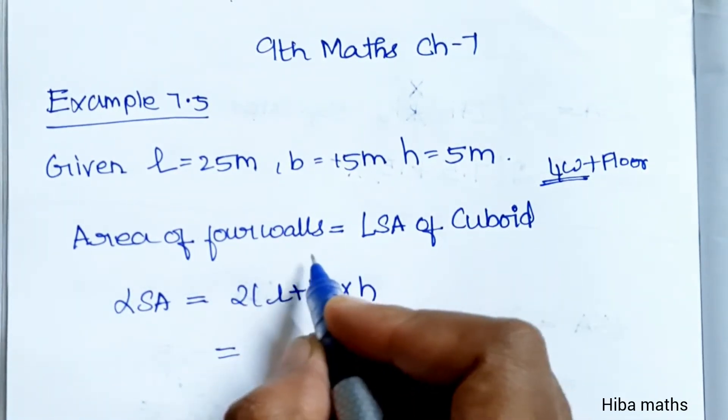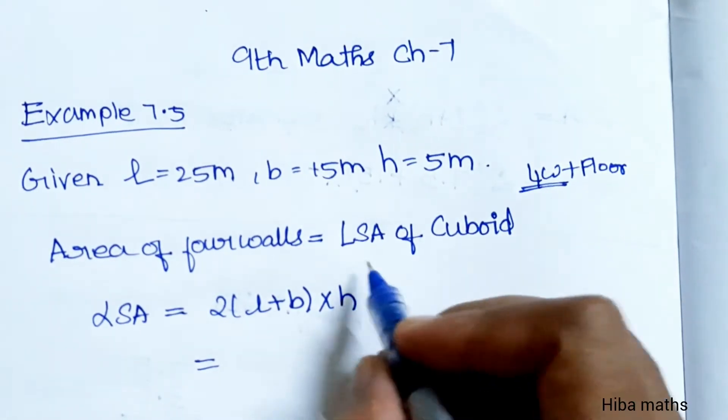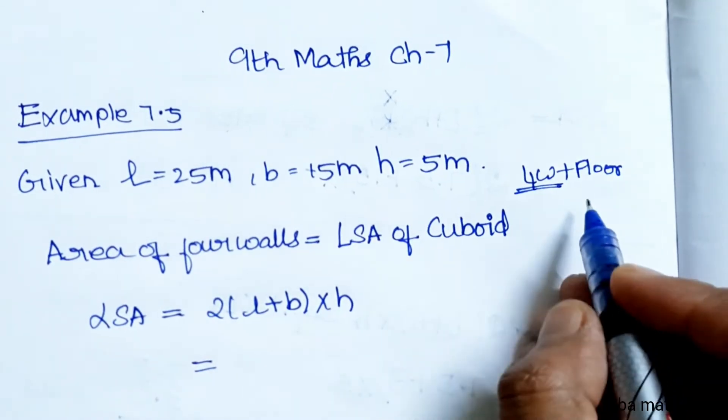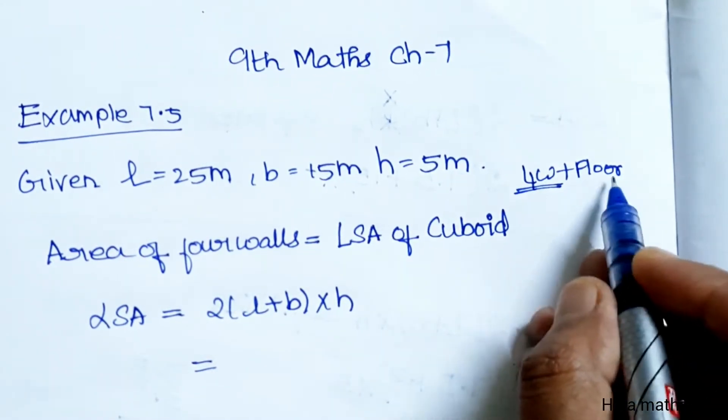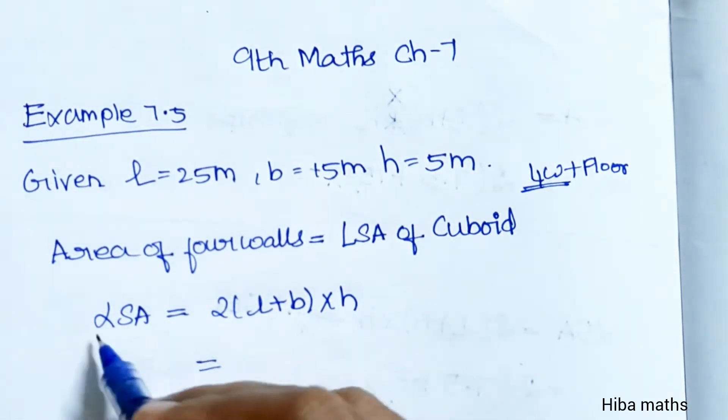Area of four walls is the LSA (Lateral Surface Area) of a cuboid. The formula is 2(L+B) × H.